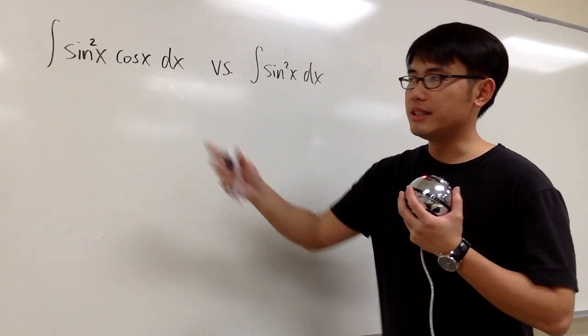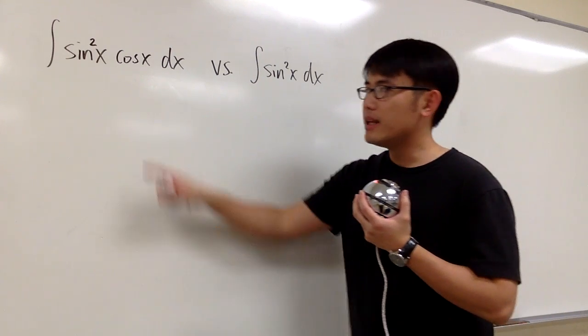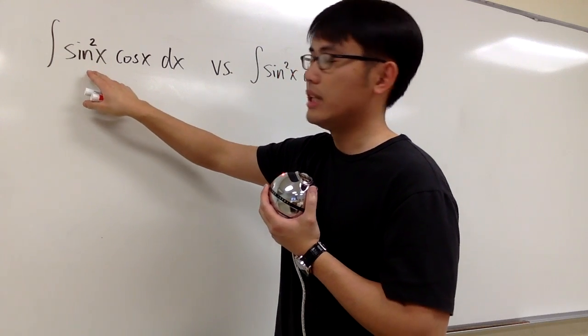Based on this, which one do you think is easier to integrate? And the answer should be the first one. Because we have the cosine x right here, and then this part is just an expression in terms of sine x.